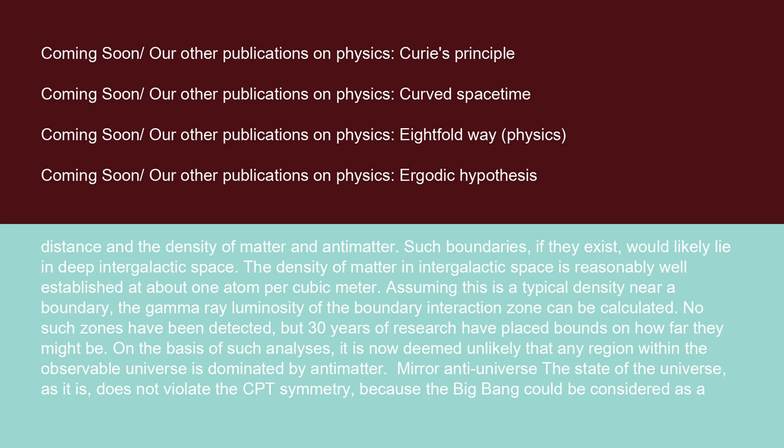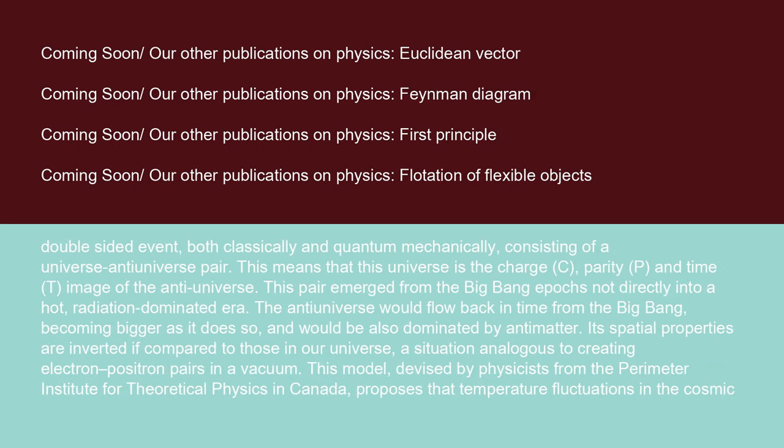Mirror anti-universe. The state of the universe, as it is, does not violate the CPT symmetry because the Big Bang could be considered as a double-sided event, both classically and quantum mechanically, consisting of a universe-anti-universe pair. This means that this universe is the charge (C), parity (P), and time (T) image of the anti-universe.